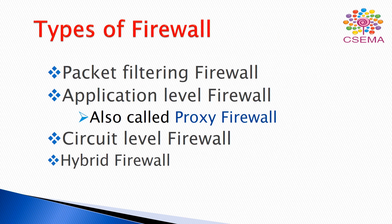Now let's look at the kinds of firewalls commonly used in networks to create a safe environment. There are four firewalls widely used: first is the packet filtering firewall, second is the application level firewall also known as the proxy firewall, third is the circuit level firewall, and the fourth is the hybrid firewall. Let's describe each one individually.